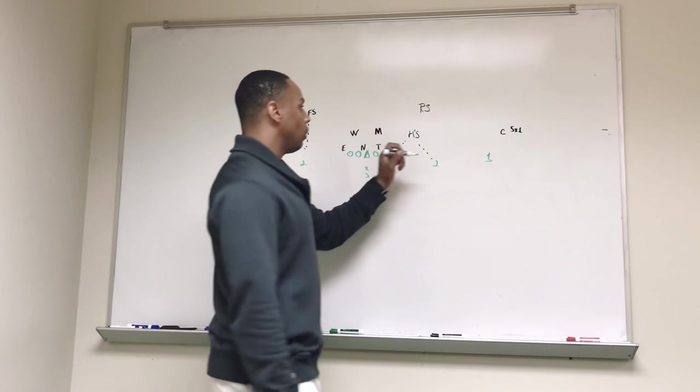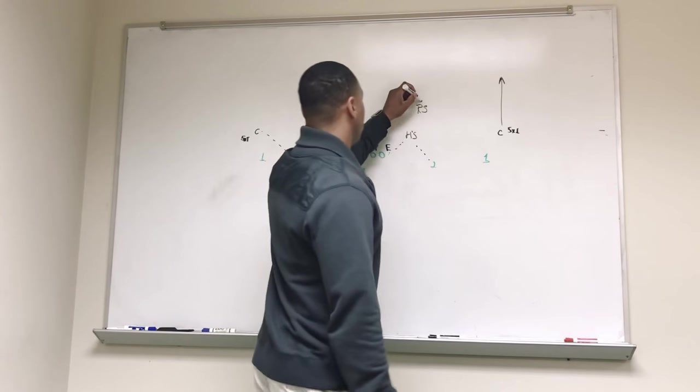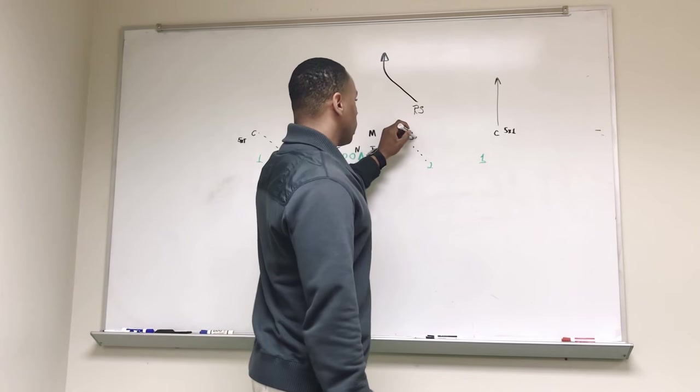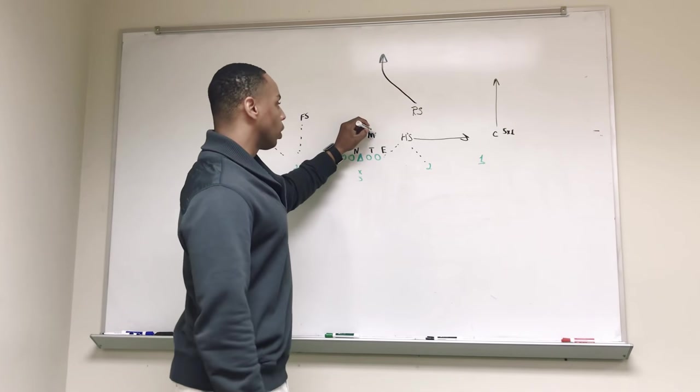And on the backside over here, our corner is going to play deep 3rd. On set hike our safety is going to bail and roll, play middle 3rd deep. And then our hawk safety is going to play the flat. We're going to play hook to curl here.